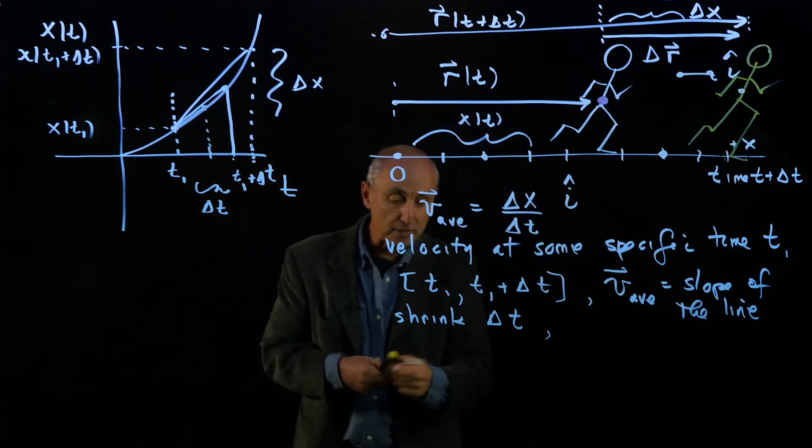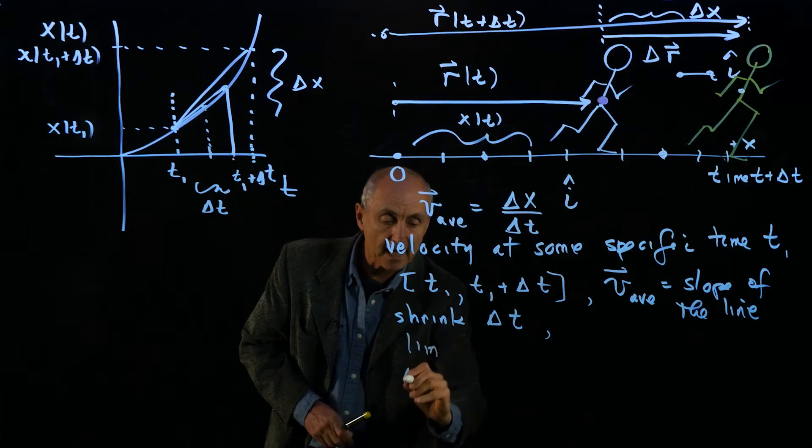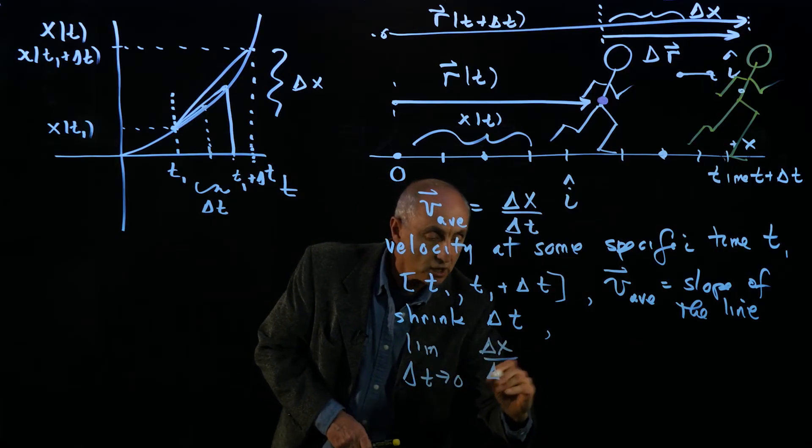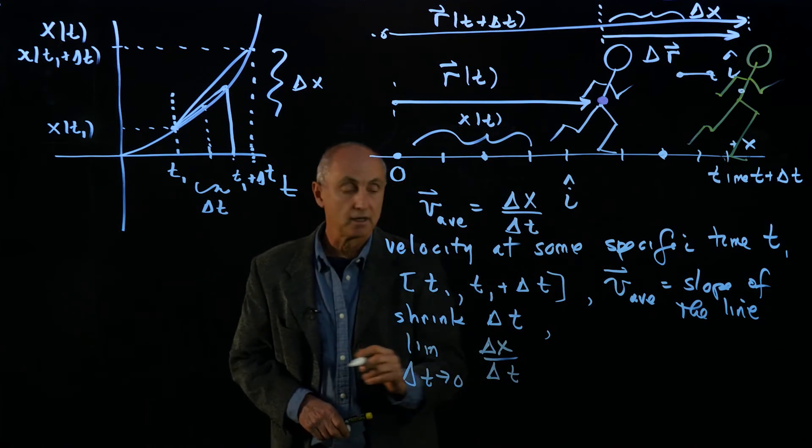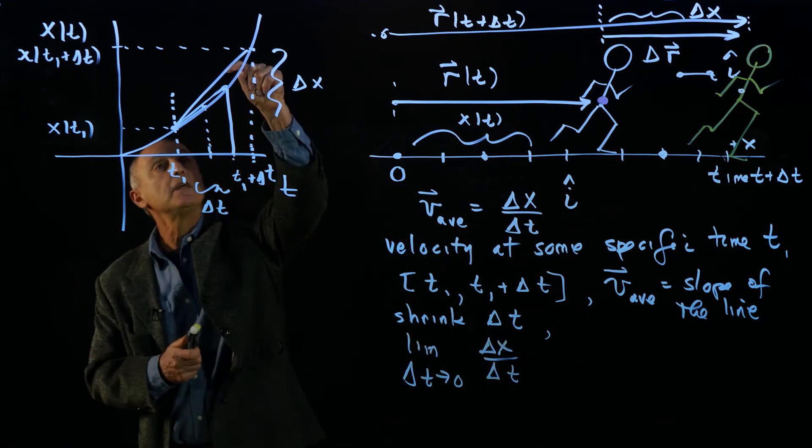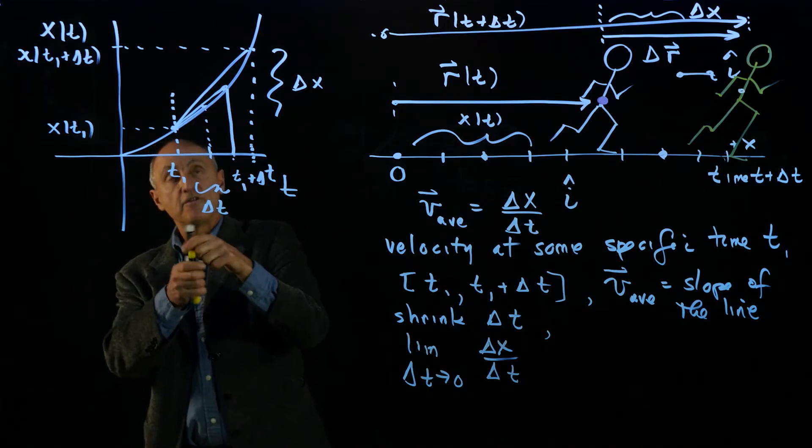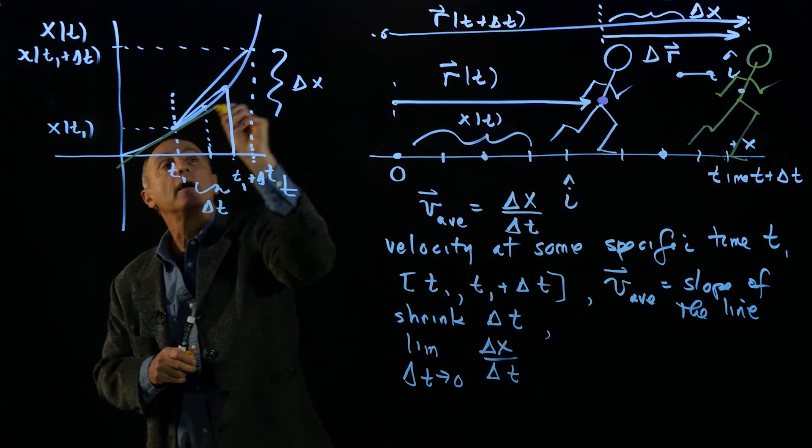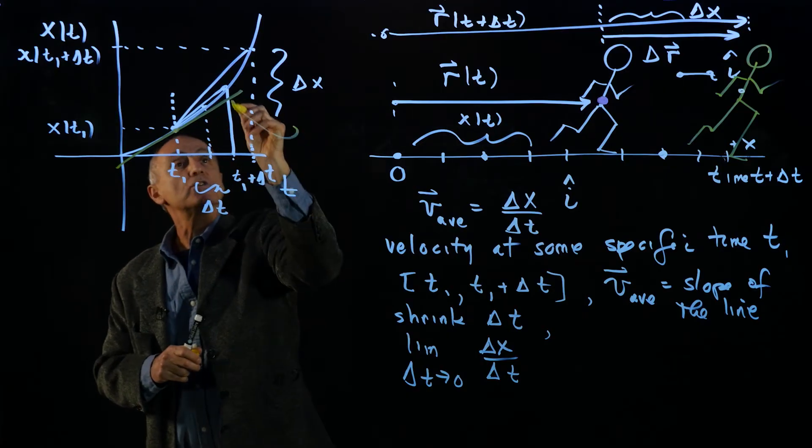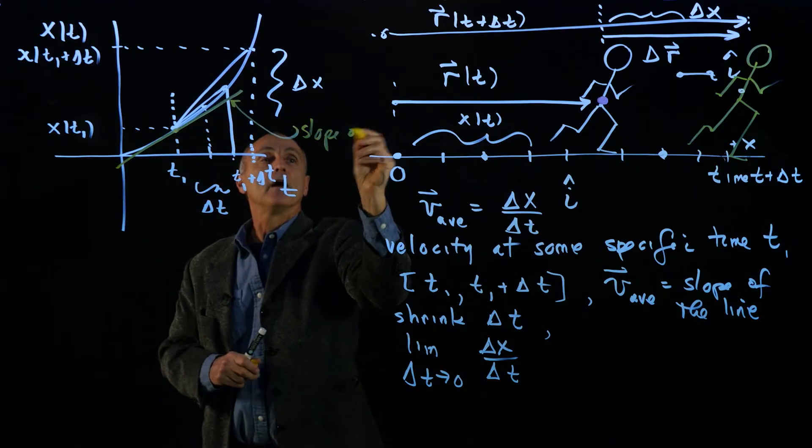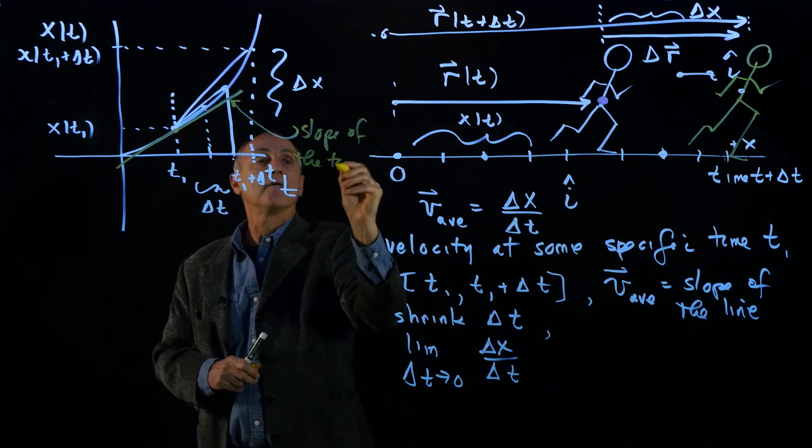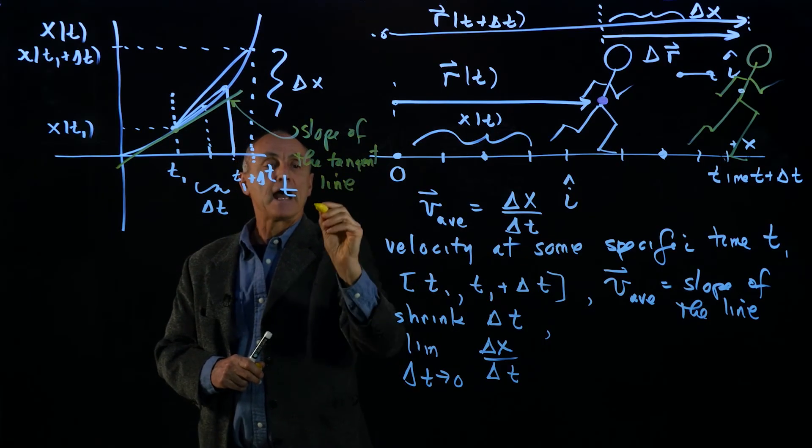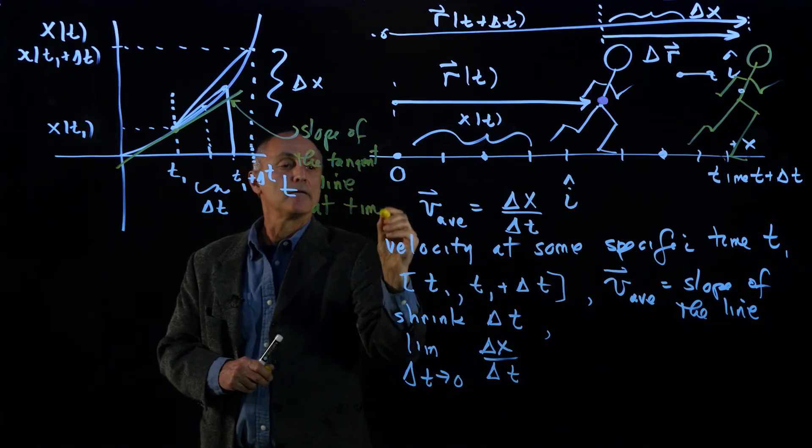And if we consider the limit as delta t goes to zero of this sequence of slopes, then what are we getting? You can see graphically that eventually we will get to a line which is the slope of the tangent line at time t1.